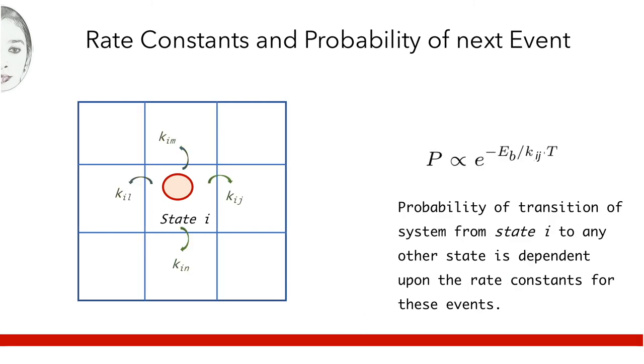For a system in state i, probability of its transition from one to another is dependent upon the rate constant of the event. For any event to occur, the system has to cross the energy barrier, the probability of which is often given by Boltzmann distribution as mentioned here, where Eb is the activation energy and kij is the rate constant for the system to move from state i to j.